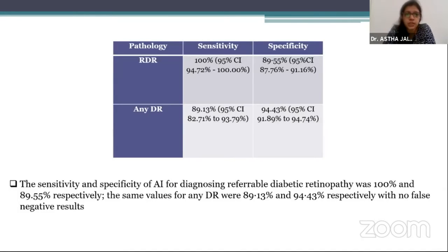The sensitivity and specificity of diagnosing referable DR was 100% and 89.5% respectively by the AI. For detecting any DR, which also included mild NPDR, the sensitivity was 89% and specificity was 94.43%, with no false negative results.